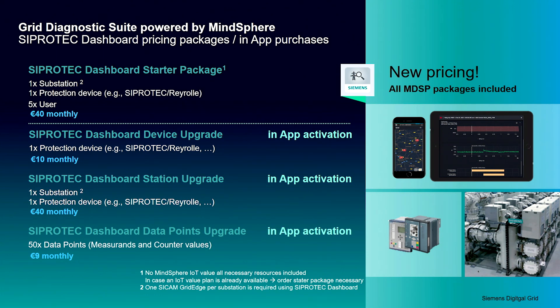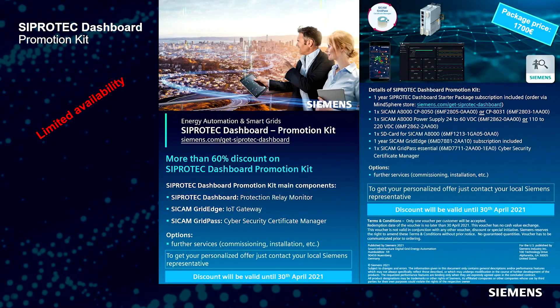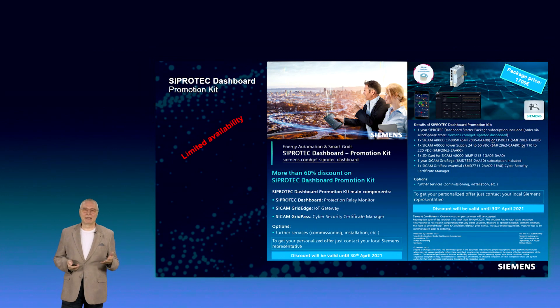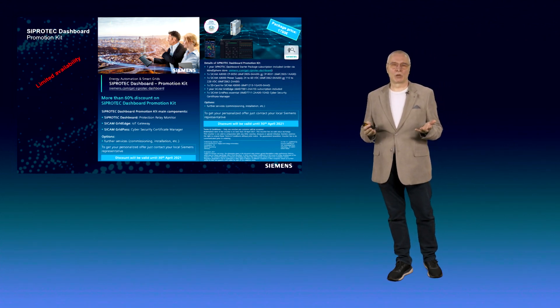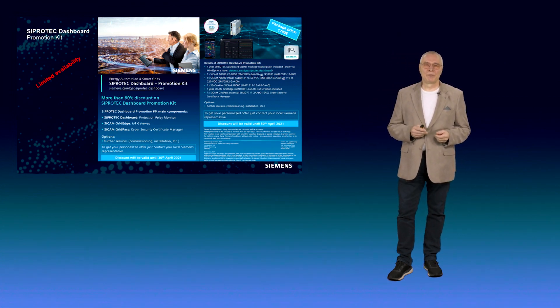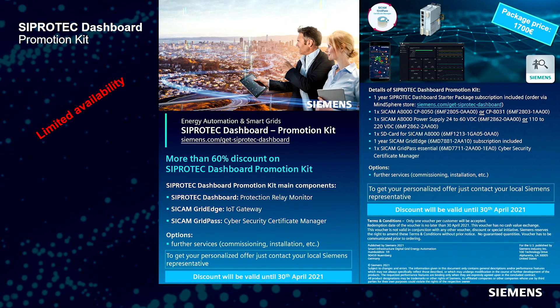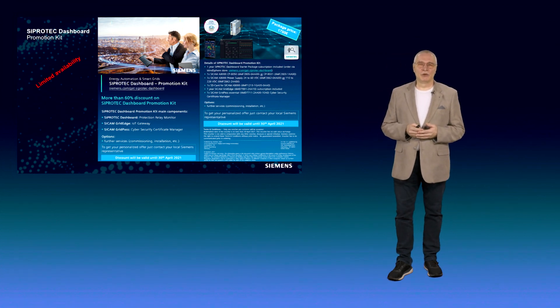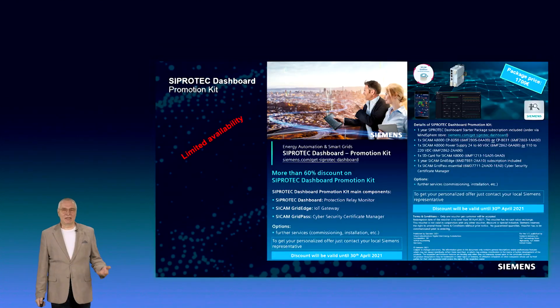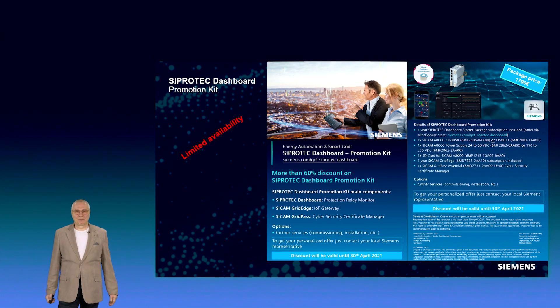Ready to try it out by yourself? There is a special promotion kit for you. For a short while we offer a promotion kit at 60% discount to make a trial as easy as possible. The C-Protect Dashboard promotion kit contains all components for a quick start: a one-year subscription for the C-Protect Dashboard starter package, the C-CAM GridEdge, and GridPass for creating certificates. It's a great chance to get familiar, play around, and check out all the functions. It's also an opportunity to experience the benefits and introduce it to your colleagues or within your organization. To get it, just contact your local Siemens partner or send an email to us. I hope I could give you insight into the functionality and cybersecurity features of our Grid Diagnostic Suite and especially the C-Protect Dashboard and its benefits.